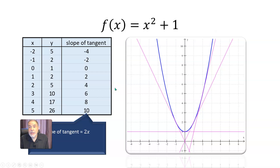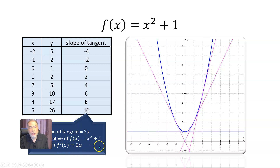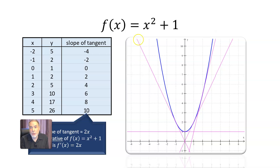That's true for this particular curve, but it might be a different relationship for a different curve. For this function, the derivative of x squared plus one is 2x. So if f of x is x squared plus one, we can say that f prime of x equals 2x. So far I haven't explained where this comes from or why it's 2x — I'm just showing you this as one example of a derivative.